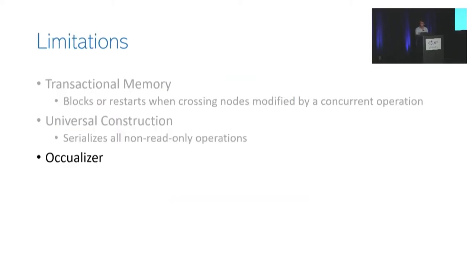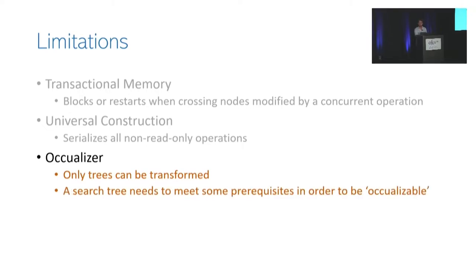OCCUalyzer's advantages don't come for free. Compared to general automatic transformations like universal constructions and transactional memory, OCCUalyzer is specialized to search trees and cannot be used to convert other data structures. In order to satisfy the correctness proof, the input tree code must satisfy certain prerequisites, and it is the user's responsibility to manually verify that these prerequisites are met.